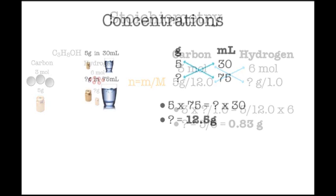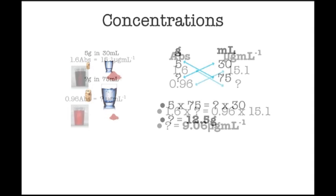Our third example uses the headings of grams and mils. Cross multiplication gives us 12.5 grams of solute present in the solution. Next, we use headings of absorbance and micrograms per mil to solve for the unknown and get 9.06 micrograms per mil of solute present.